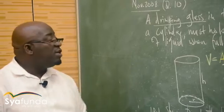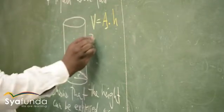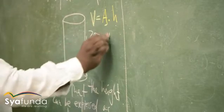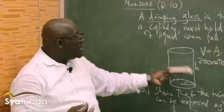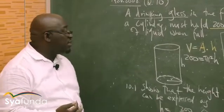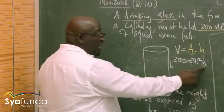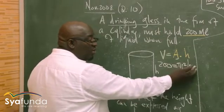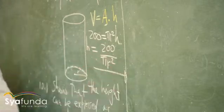We know the volume — it's 200 mils. We don't know the height; that's what we want. So our volume equation is: 200 equals pi r squared times h. We need to make height the subject of the formula. We divide both sides by pi r squared, so h equals 200 over pi r squared. Yes, it can be expressed in that form.